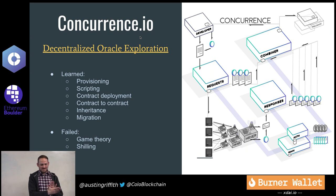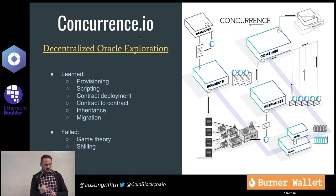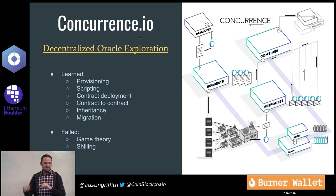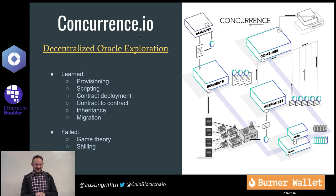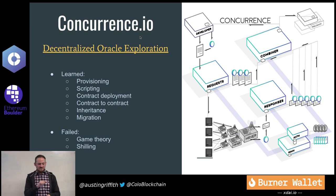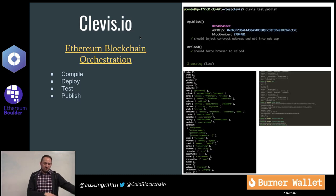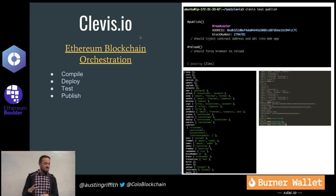My first failure was Concurrence — I tried to build a decentralized oracle. I learned a ton about Ethereum: how to provision a geth node, write scripts, deploy contracts, how contracts talk to each other, contract inheritance, migrating contracts. Things I failed at: game theory, learning how to share and shill something. I basically posted it on ethdev and was like 'ICO in a week' — that didn't work. On-chain governance is super hard. But what I got from that was a really cool library I use for orchestration — compile, deploy, test, and publish from the command line. That's Clevis.